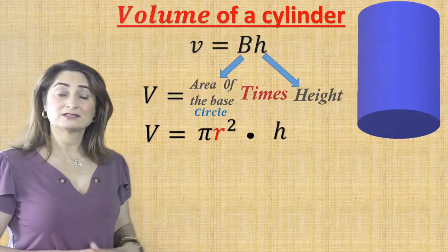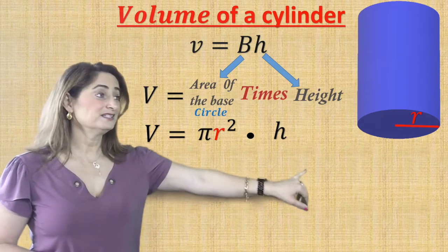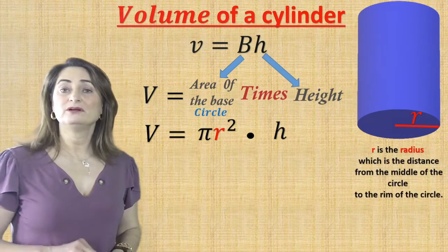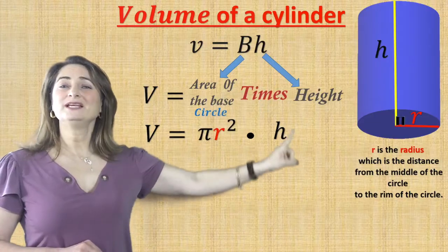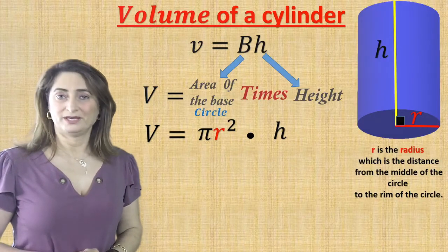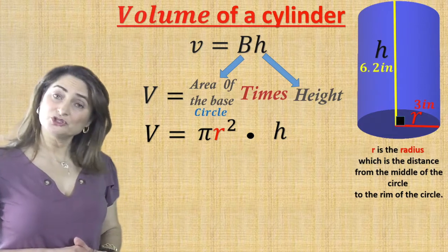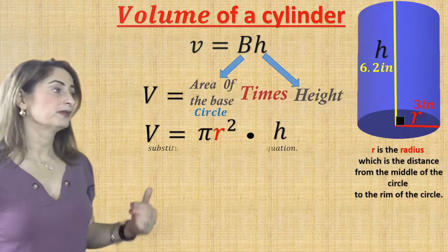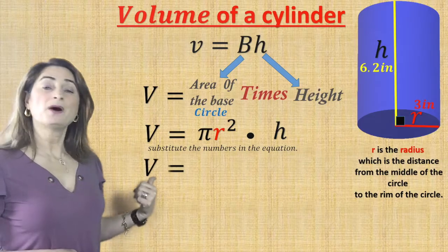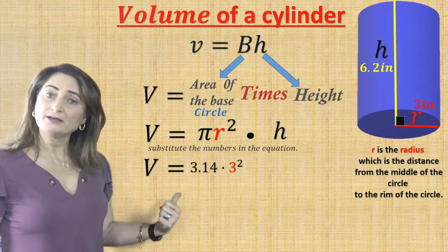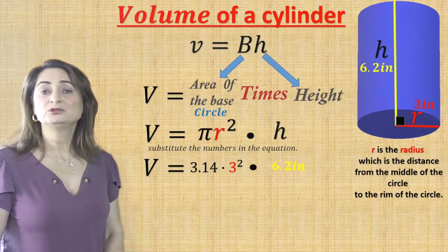Now let's talk about the radius. The radius is always part of a circle — it is the distance from the middle of the circle to the rim of that circle, and we call it r. The height, which is h, always makes a 90-degree angle with the base. Now let's say the radius is 3 inches and the height is 6.2 inches. Find the volume of that cylinder.